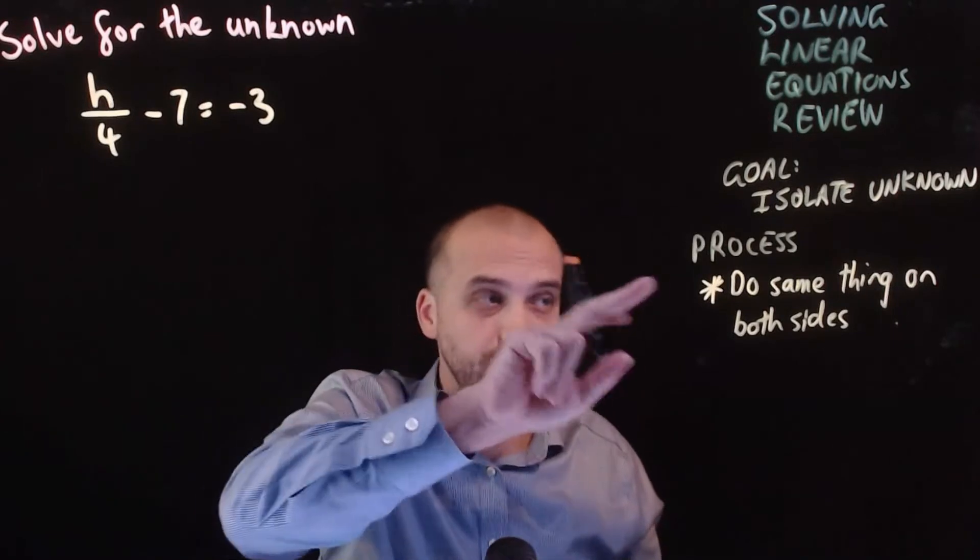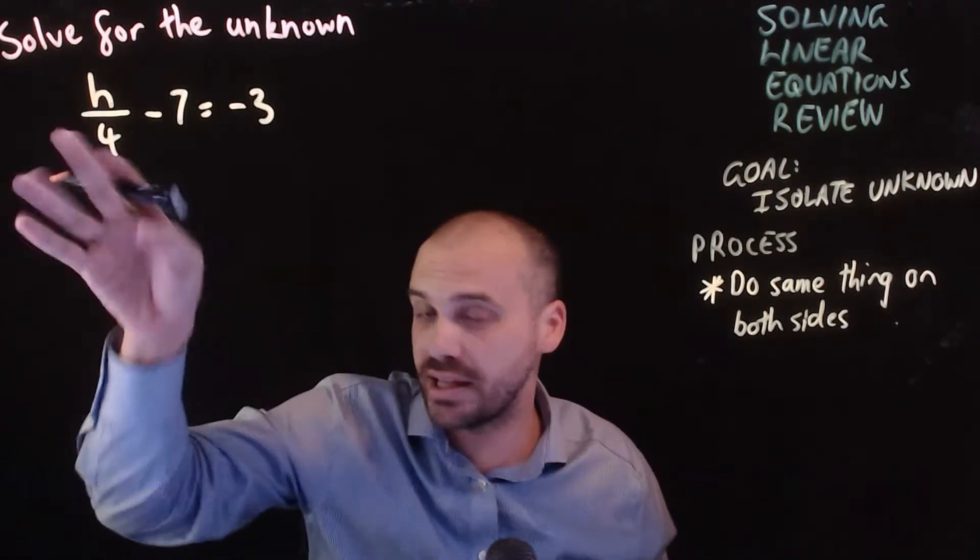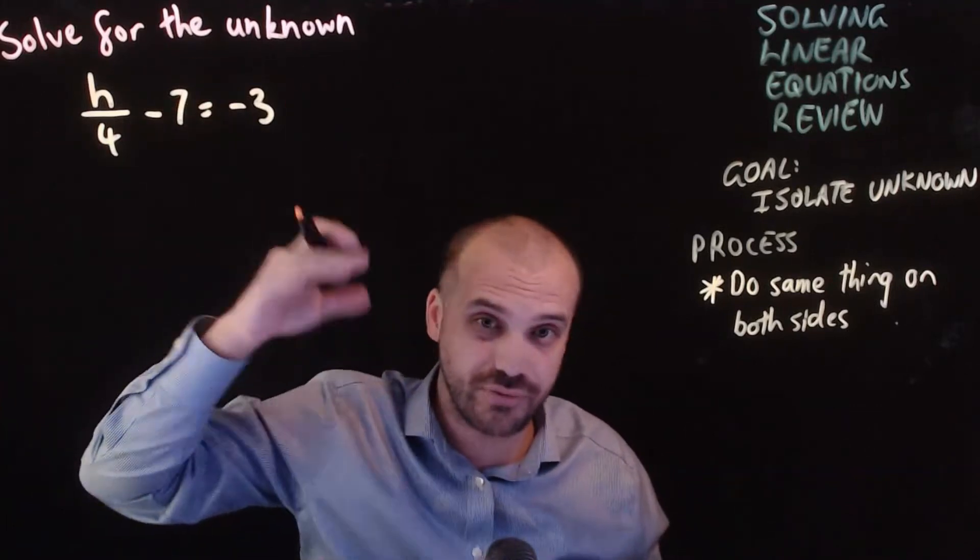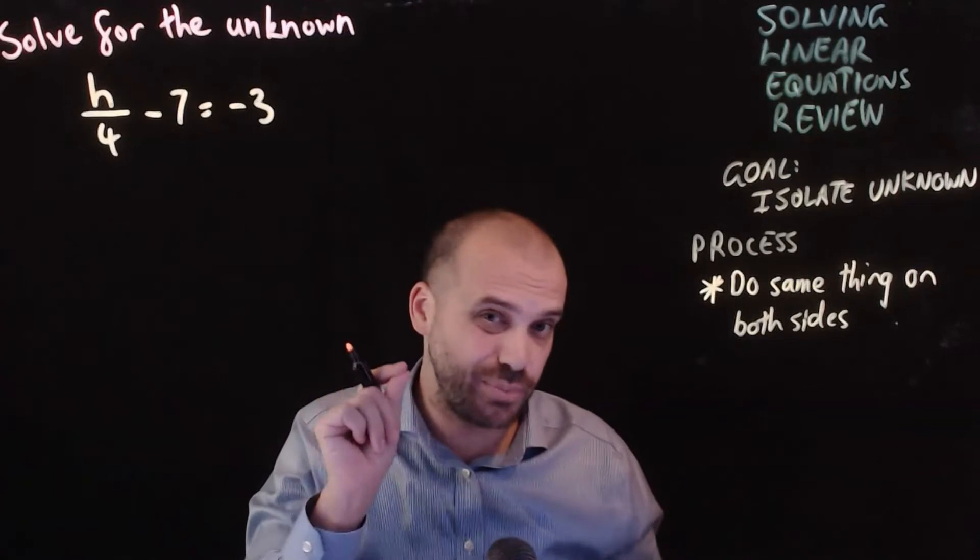Now the process to get to that goal, do the same thing on both sides of the equals sign. If you add something on this side, add it on that side. If you divide by 2 on this side, divide by 2 on that side.